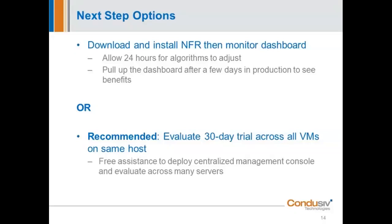We recommend deploying Velocity to all the VMs on a host, or even all the VMs in your environment. At a minimum, if you're doing this on SQL, put it on your SQL server. But if you've got other points that data is flowing through — for example, a three-tier architecture with an app server and a web server — each of those servers adds a potential point of latency. Put Velocity on all three.